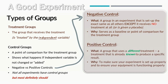A positive control — we don't always find one, but it is always best practice. A positive control is a group that uses a different treatment: a treatment that is already known to produce a specific result. This is the same as your treatment group except instead of using the treatment that you're testing, you use a treatment that you already know produces a specific result.